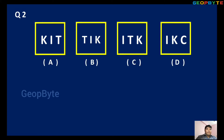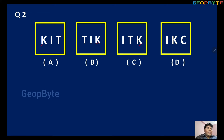Second question — very easy, like a game. Options A, B, C, D. Option A: letters K, I, T. Option B: T, I, K. Option C: I, T, K. Option D: I, K, C. You can easily identify: K, K, K, K — I, I, I, I — T, T, T, T — but in option D there is no T.